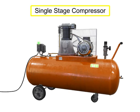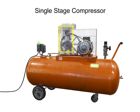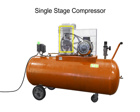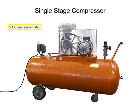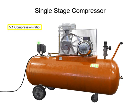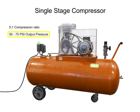This is a single stage compressor. It has only one piston and cylinder and compresses the air in only one stage. A single stage compressor typically has a compression ratio of 5 to 1, with an output pressure of about 50 to 75 psi.